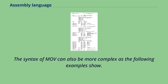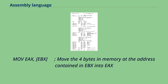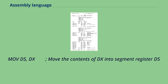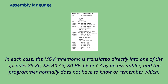The syntax of MOV can also be more complex, as the following examples show: MOV EAX, [EBX] — move the 4 bytes in memory at the address contained in EBX into EAX; MOV [ESI+EAX], CL — move the contents of CL into the byte at address ESI+EAX; MOV DS, DX — move the contents of DX into segment register DS. In each case, the MOV mnemonic is translated directly into one of the opcodes 88, 8C, 8E, A0, A3, B0–BF, C6 or C7 by an assembler, and the programmer normally does not have to know or remember which.